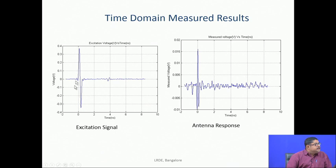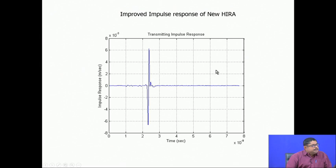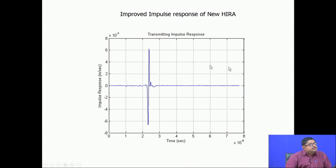The HIRA shows very low ringing and a good impulse response — giving a double-sided output when an impulse is input, which is typical because in the far field the antenna produces the derivative of the input. The positive and negative peaks are due to the direct and reflected contributions of the launched wave. Various terminators can be used, including metal film resistors or carbon composition resistors.